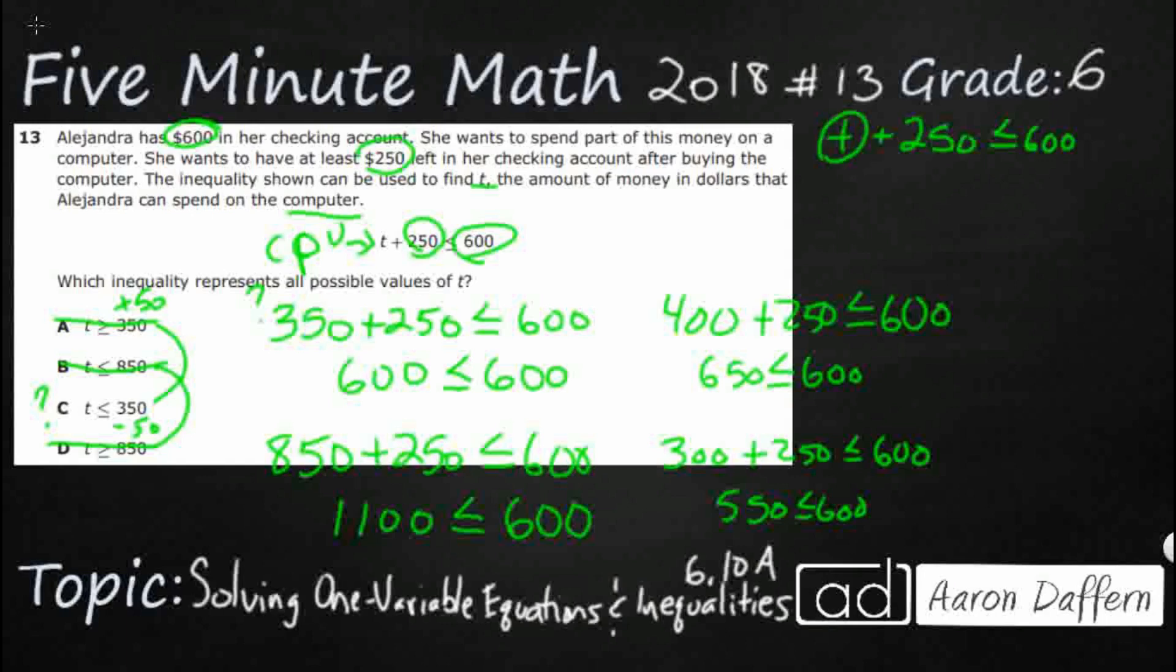We want to get this T by itself. We want to isolate the variable. Well, the only thing on the same side as that T is the plus $250. So we think inverse operations. What's the opposite of addition? That's subtraction. So if we have plus $250, let's take away $250.